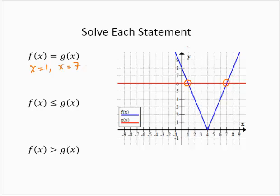Now, what I like to do at this point is kind of think of those x values as boundaries. x equals 1 is a boundary, and x equals 7 is a boundary.